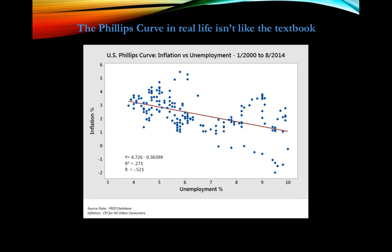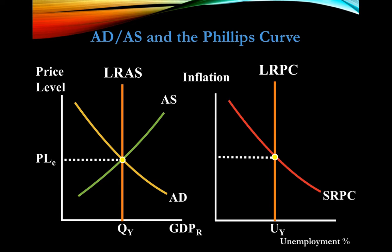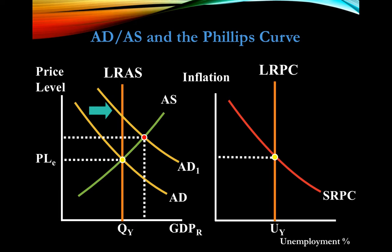Now let's look at the Phillips Curve as it relates to aggregate demand and aggregate supply. On the left we have our AD/AS graph, and on the right we have our Phillips Curve. If we have a rightward shift in aggregate demand, that decreases unemployment and increases the price level. On the Phillips Curve, lower unemployment moves us left and higher price level also moves us left — so a rightward shift of aggregate demand moves us leftward along the Phillips Curve.